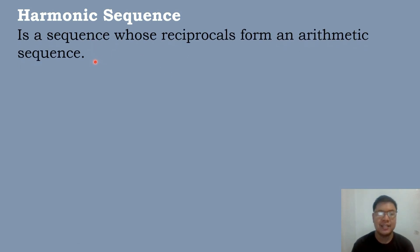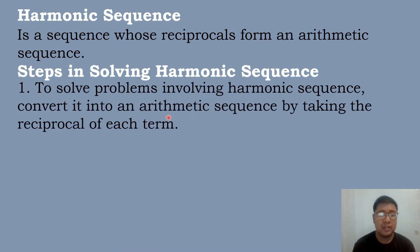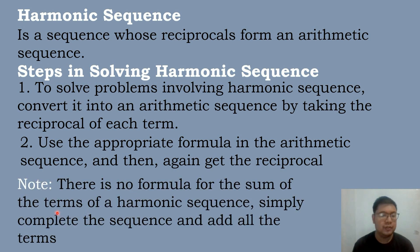Let's now have the next type of sequence, which is the harmonic sequence. When we say harmonic sequence, it is a sequence whose reciprocal forms an arithmetic sequence. The steps in solving harmonic sequence: first, convert it into an arithmetic sequence by taking the reciprocal of each term. Then use the appropriate formula for the arithmetic sequence, and then get the reciprocal again. Note that there is no formula for the sum of the terms of a harmonic sequence, so we simply complete the sequence and add all the terms.